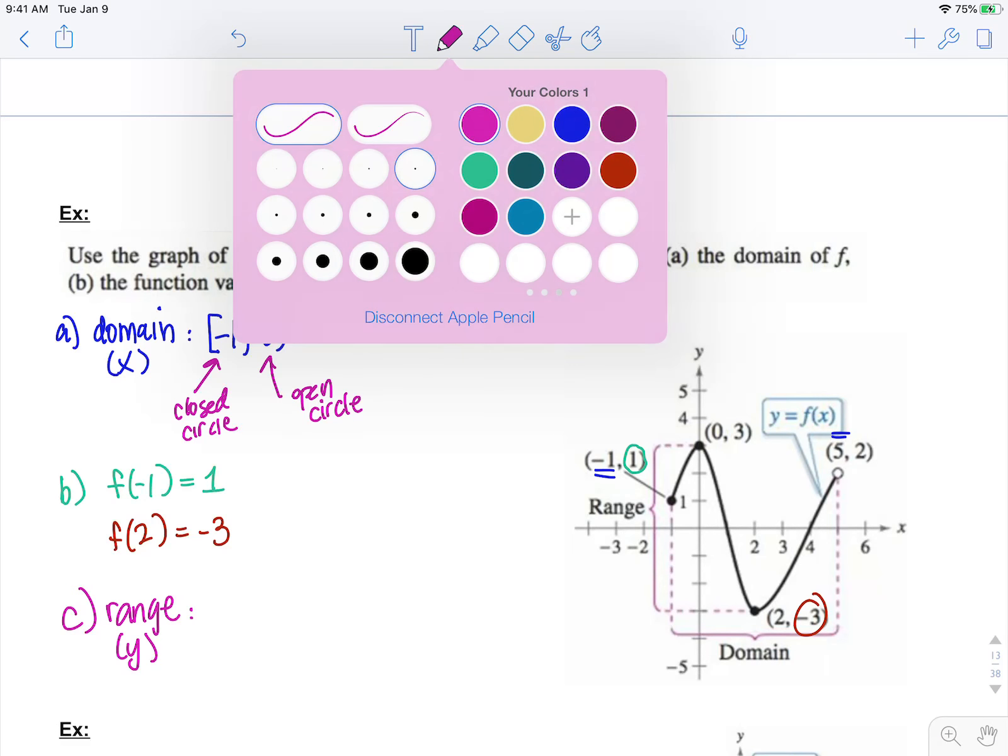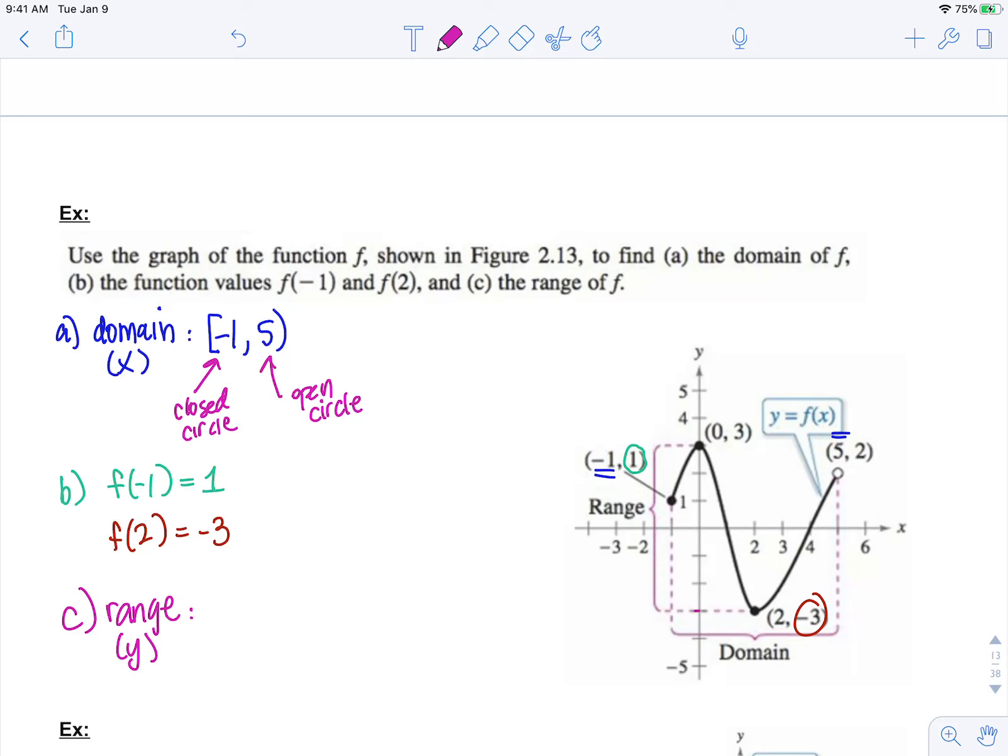So we have to ask ourselves, what's the lowest y value? This is starting here. And all the way up to the highest possible y value here. And notice there are closed circles for both of these values. So my range is the lowest y value, negative 3.